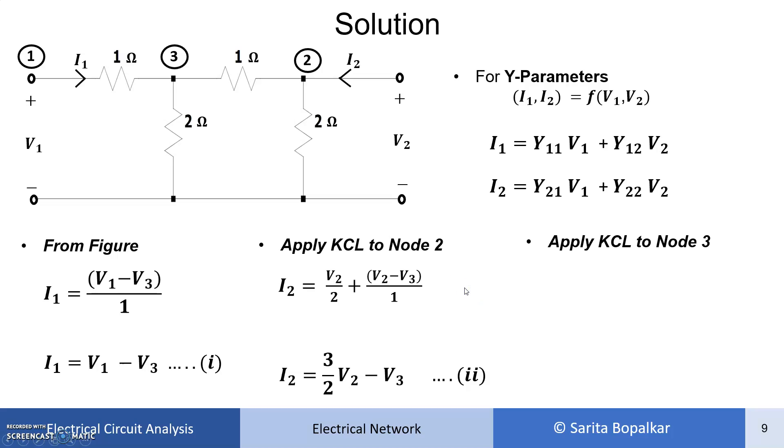Now KCL at node 3. Three branches are there, so three branch currents you have to add. V3 minus V1 upon 1, V3 by 2. Let's solve this, combine the similar terms, and we will get V3 equals 3 by 5 V2 minus 3 by 5 V1.